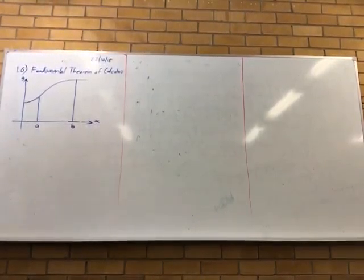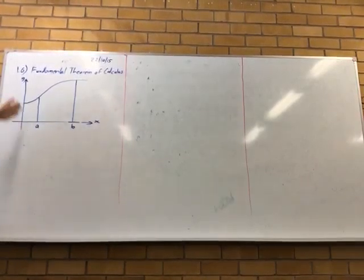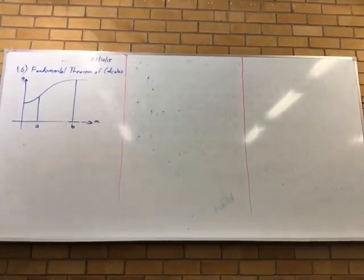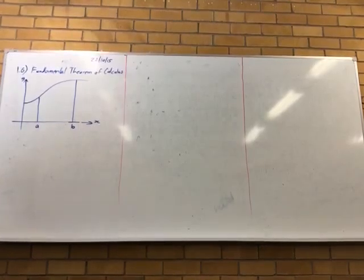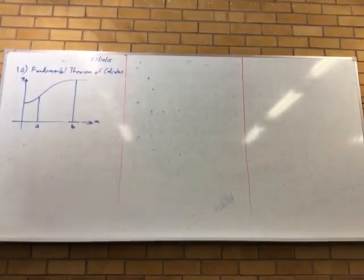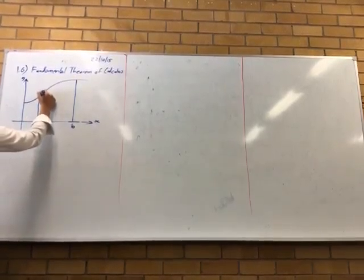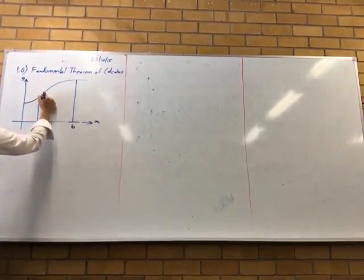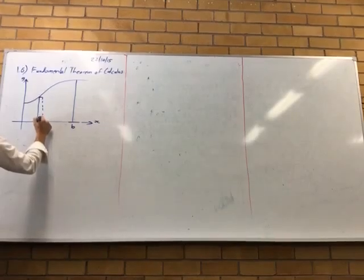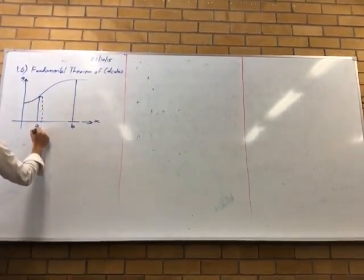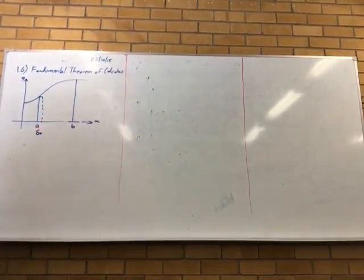Okay, so remember how we talked about the approximation methods way back at the start of the unit, and we took the rectangles in there. If we made the width of the rectangles smaller, we're able to fit more rectangles in underneath and get a better approximation to the area under the curve. Delta x, which is the width of your rectangle.